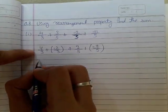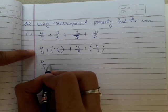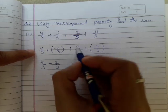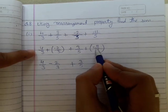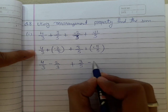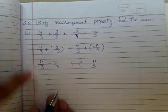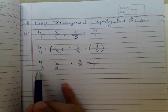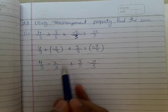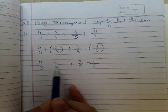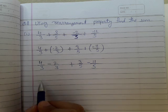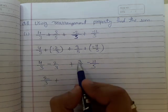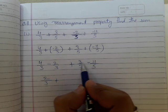Now we will remove the brackets, so I can write 4/3 - 2/3 + 3/5 - 11/5. The advantage of this step is that when denominators are the same, we solve only the numerator part. So 4 - 2 = 2, with denominator 3, plus 3 - 11 at the numerator with denominator 5.